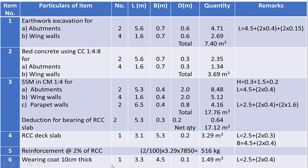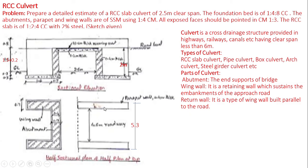Item number six: wearing coat, 10 cm thick. The length of wearing coat equals width of stream plus width of abutment at each side, that is 2.5 + 2 × 0.4 = 3.3 meters. Width of wearing coat equals width of roadway = 4.5 meters, and thickness is 0.1 meters. Quantity becomes 1.49 cubic meters. If the rates of construction for these items are known, the total cost of the culvert can be estimated using an abstract estimate table. This concludes the problem.